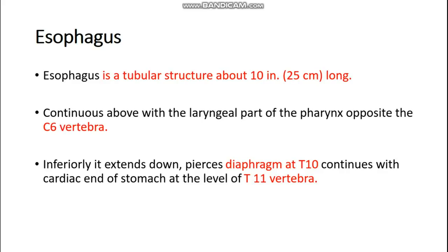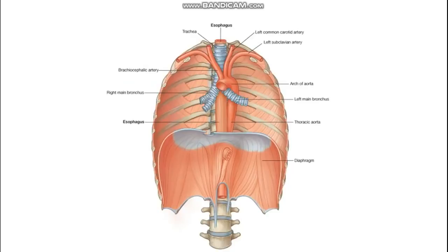This diagram shows the course of the esophagus. The blue color structure is the trachea, and behind the trachea lies the esophagus. It runs inferiorly, pierces the diaphragm at the esophageal opening at the level of T10, and joins the cardiac end, or upper end, of the stomach at the level of T11. This esophageal opening is present in the right crus of the diaphragm.